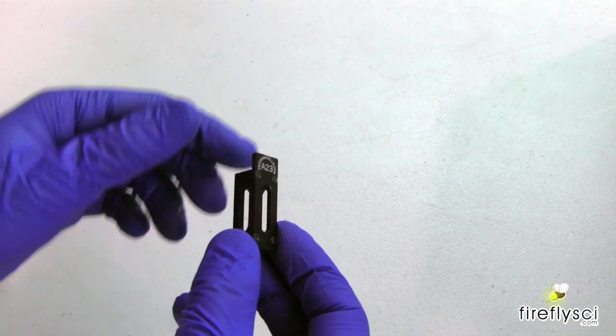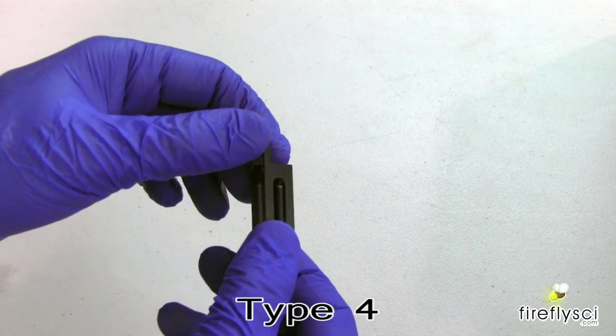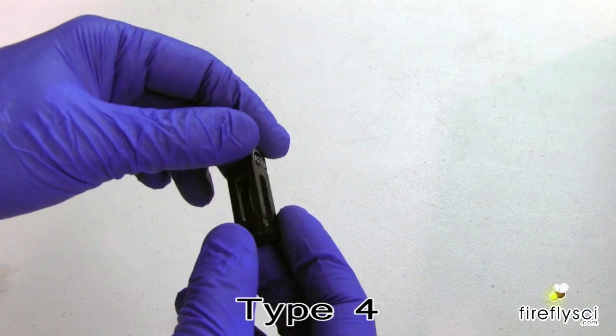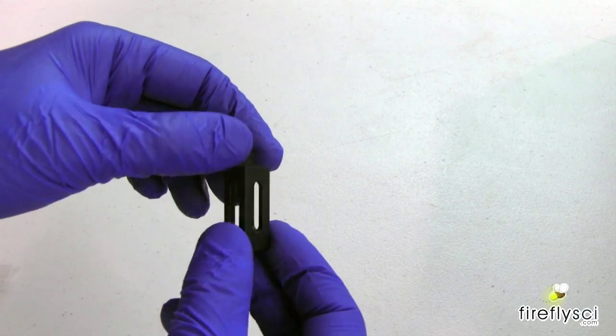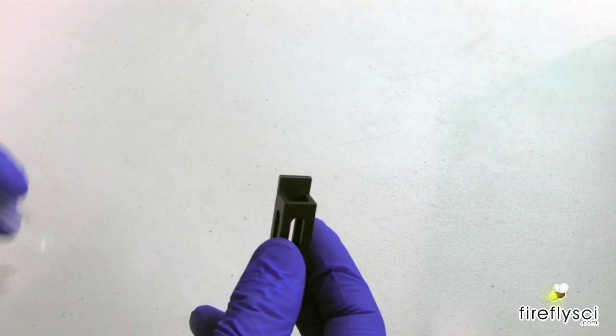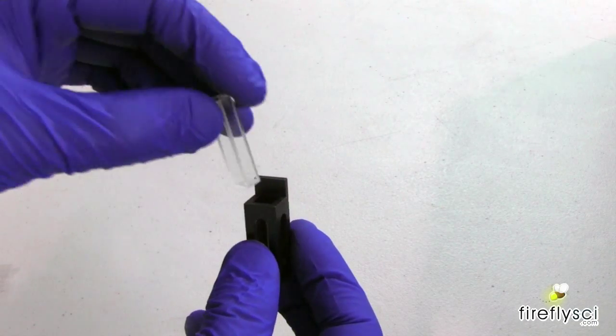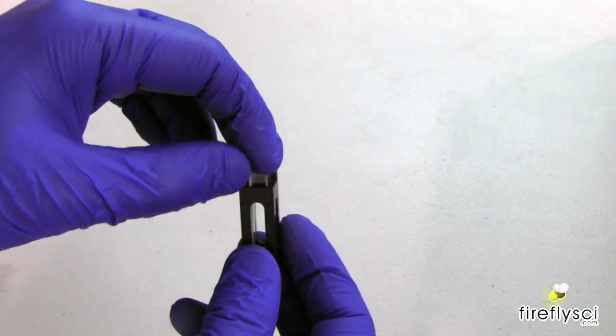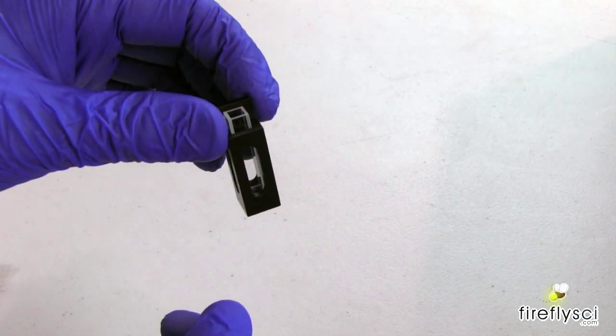So next we have our A23 cell mount. So this is for our Type fluorometer cuvette. And as you can see here, it has all four sides open. And it's very simple to insert the Type 4 and all you have to do is put it right in the top and slide it down in and it is good to go.